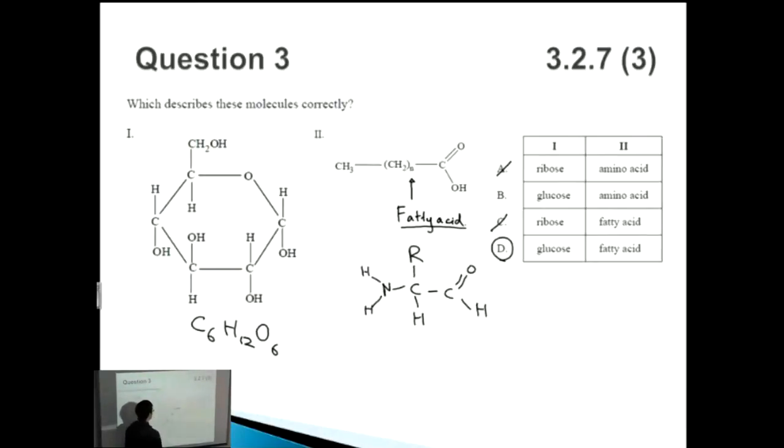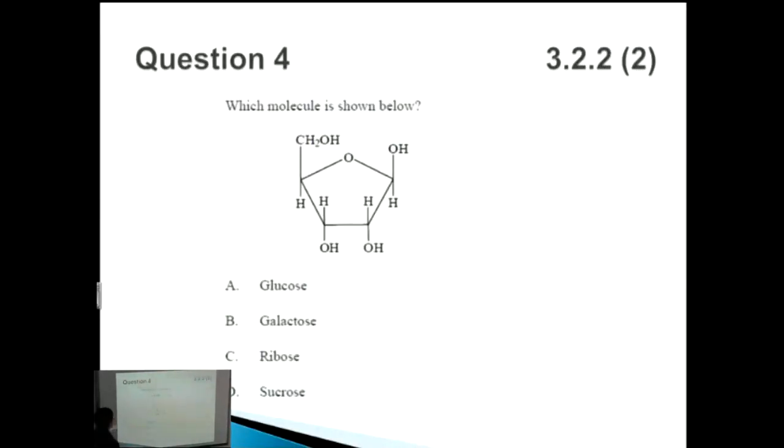So the correct answer is D. Question number four: which molecule is shown below? Once again, we've got another molecular structure. This time, let's count the number of sides to the ring, though. We've got one, two, three, four, five. There are five - not five carbons, but five sides of the ring. And if we also count the number of carbons as well - if there's nothing here, if there's no symbol here, that means it's a C. There's a C there, a C here, a C here, and a C here. So how many carbons are there? One, two, three, four, five. So it's C5.